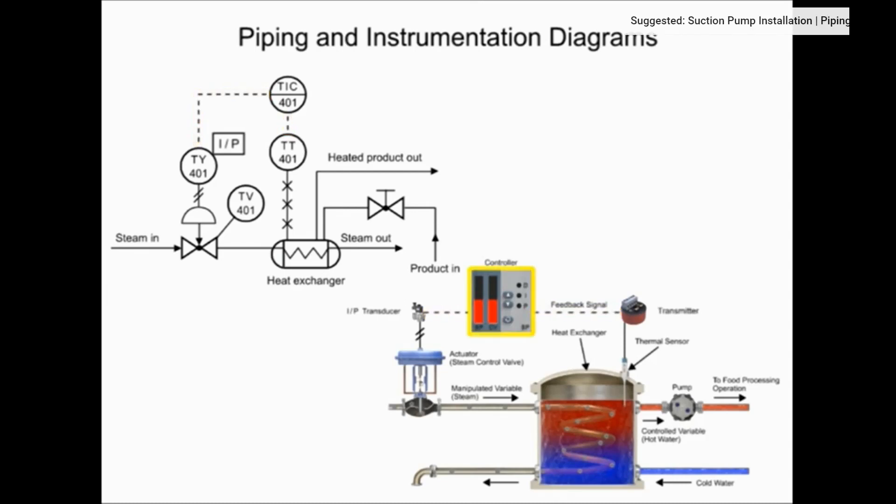The controller and indicator is the instrument where the transmitter sends an electrical signal and is shown in the functional identifier as the second and third letters, I and C. Balloons with a solid dividing line indicate that the instrument is board mounted.